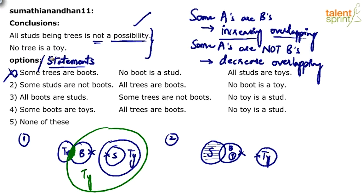Now look at conclusion two: no tree is a toy. Very clearly, no tree is a toy. Toys cannot even touch boots - there is no overlapping between toys and boots. Trees are completely inside boots and cannot come outside boots. So if toys cannot touch boots, how will toys touch trees? Not possible. No tree is a toy is also correct. Both conclusion one and conclusion two are true according to option two - so that is your answer.